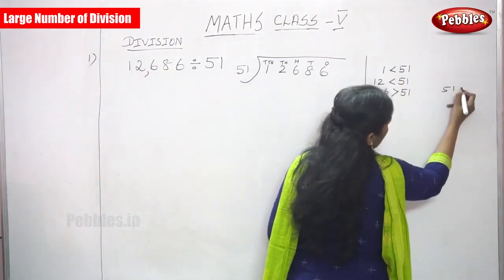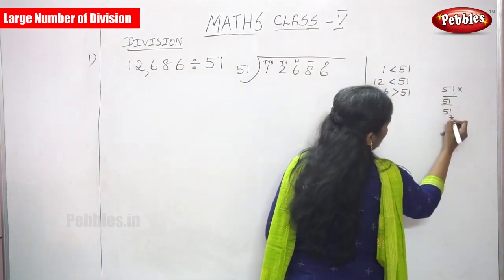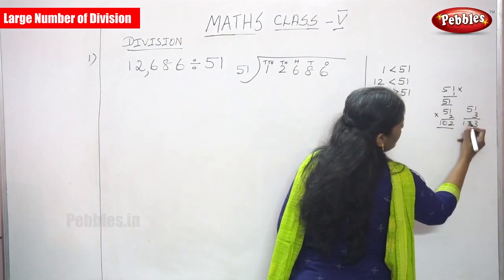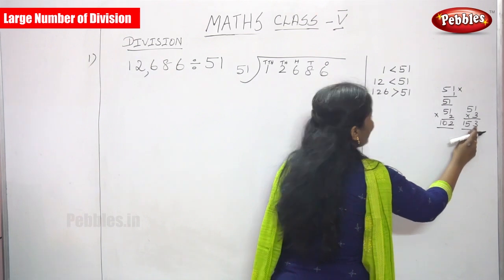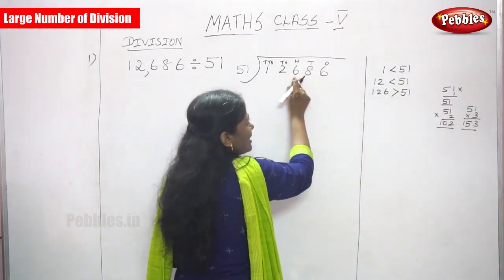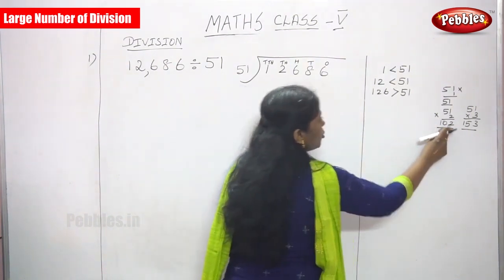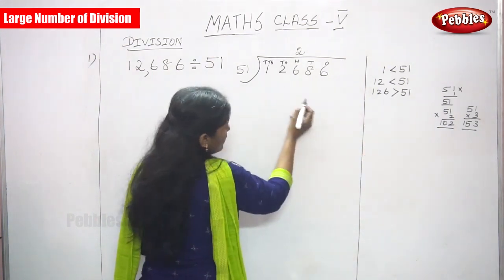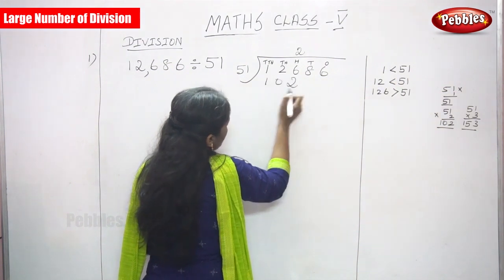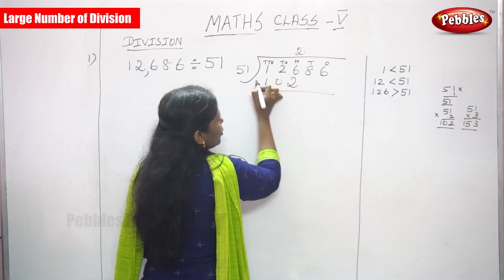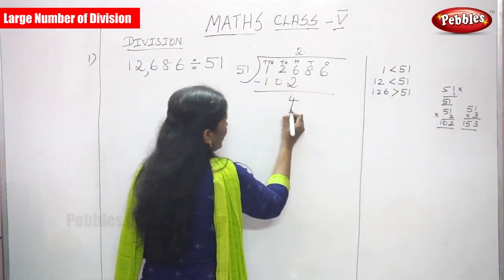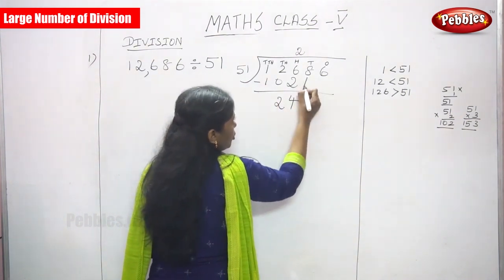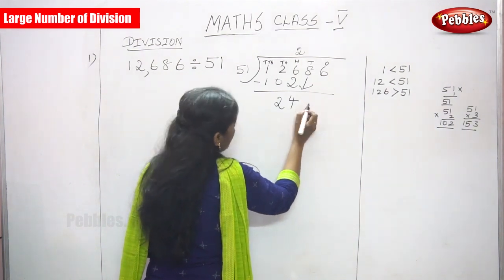Now write out the table: 51×1=51, 51×2=102, 51×3=153. Since 153 is greater than 126, we use 51×2=102. Write 2 in the hundreds place of the quotient. Subtract: 126 minus 102. 6 minus 2 is 4, 2 minus 0 is 2, 1 minus 1 is 0. Bring down the next digit, which is 8.